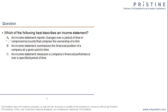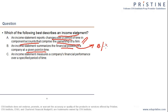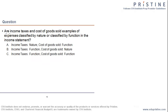Let us look at a CFA-style specimen question: 'Which of the following best describes an income statement?' Option A — an income statement reports changes in component accounts that comprise the ownership of the firm — that's actually changes in owners' equity. Option B — it summarizes the financial position at a given point in time — that's a balance sheet. Option C — an income statement measures the company's financial performance over a specific period of time — and that is the correct definition, so the right answer is C.